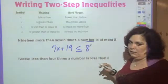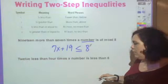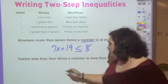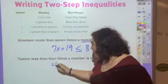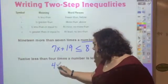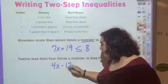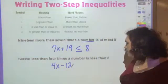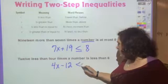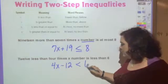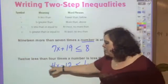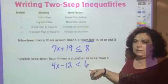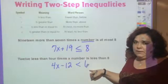This one: '12 less than four times a number is less than 6.' That gives us 4x minus 12 is less than 6.